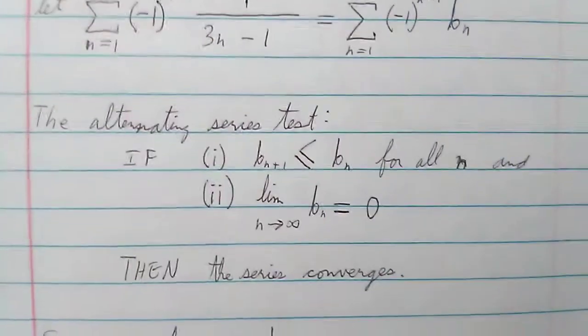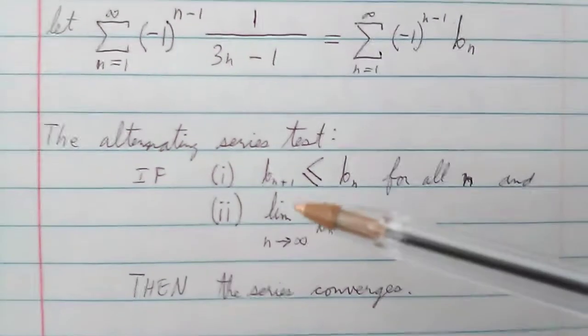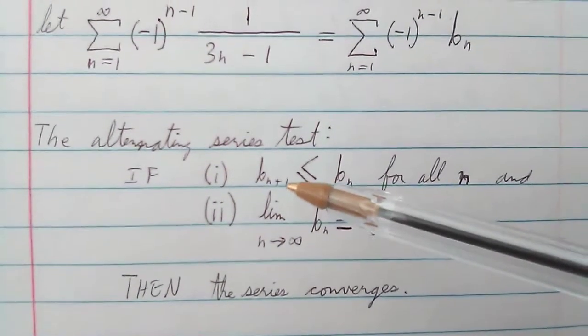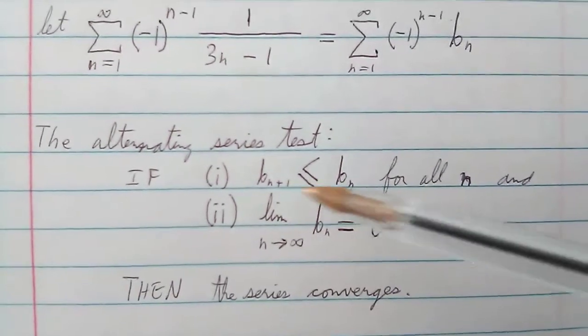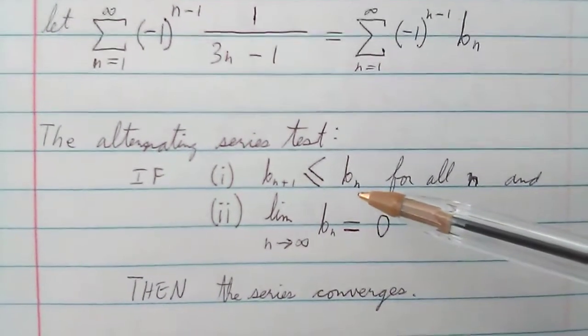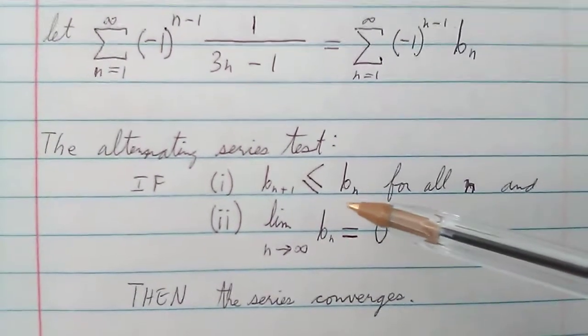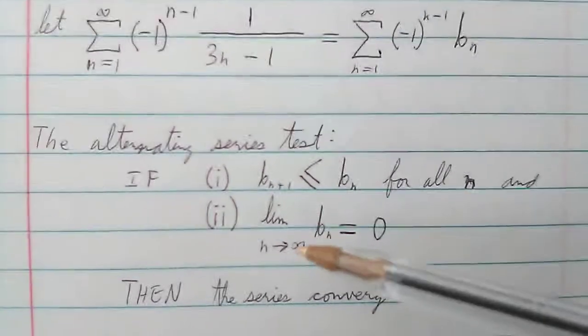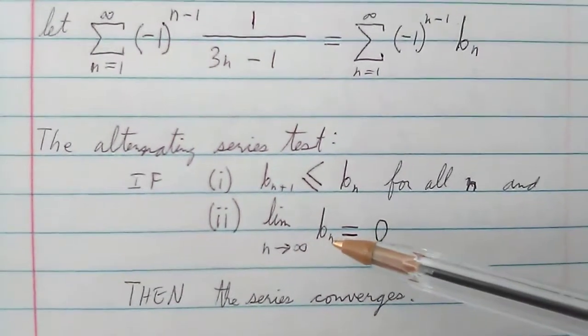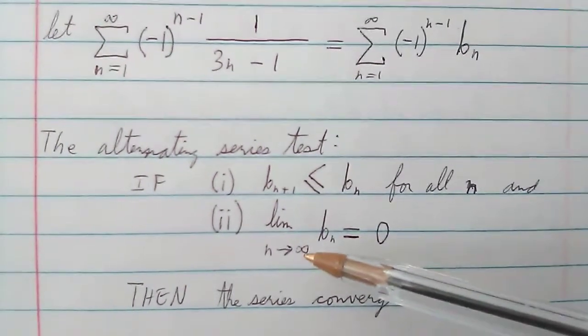And then down here we have the requirements for the alternating series test. Each time you increase the value of n by 1, it needs to be smaller than or equal to the n before it. So b_{n+1} is less than or equal to b_n for all n. And b_n also needs to drop off to nothing when you take its limit going to infinity.